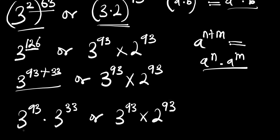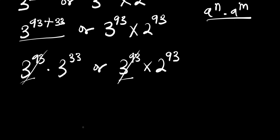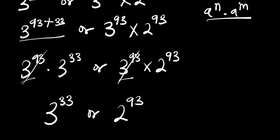Right here we have 3 to the power of 93 on both sides — these two can cancel out. So right now we are going to be left with 3 to the power of 33 versus 2 to the power of 93.